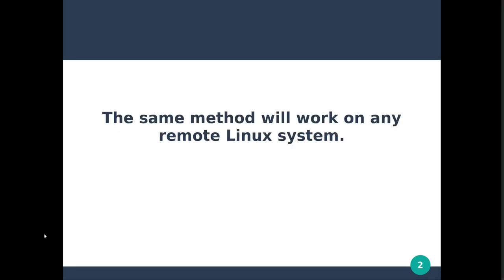This method will work on any remote Linux system — essentially the same steps. You'll need to find the kernel version on the target system, compile LIME on a different system with the same kernel version, move those binaries over, and then transfer the acquired memory image out. This will generalize to most remote Linux systems as long as you can find the same kernel version.